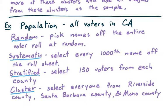For example, our population might be all eligible voters in California. To form a random sample, we'll just randomly pick names off the entire voter roll. That would be a random sample.